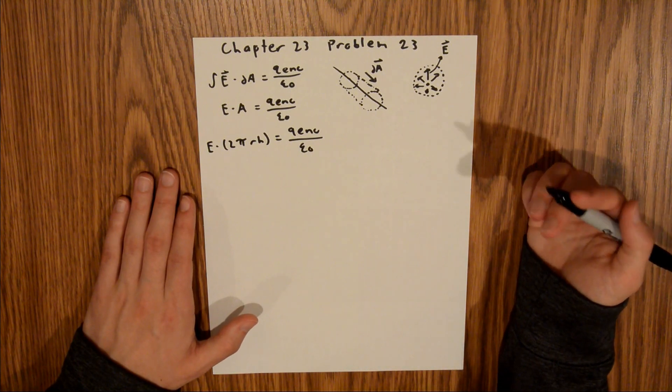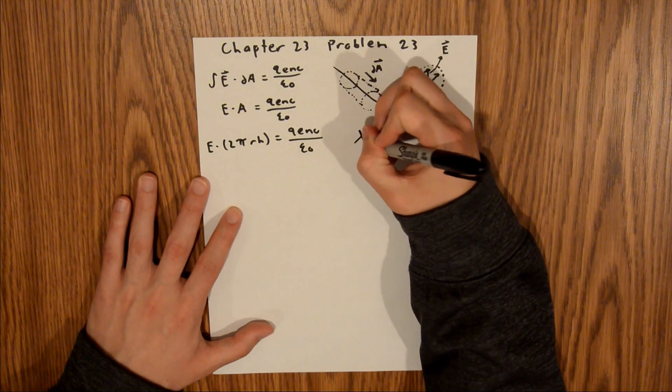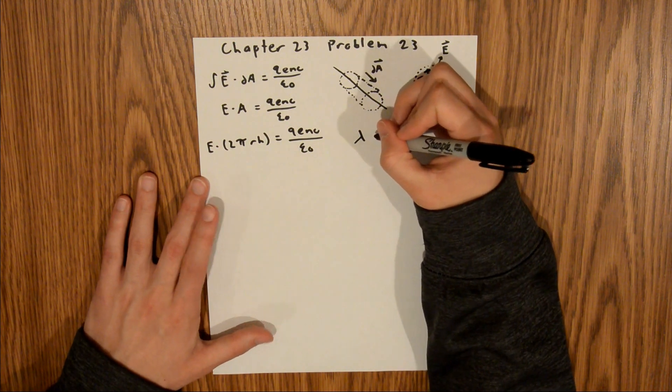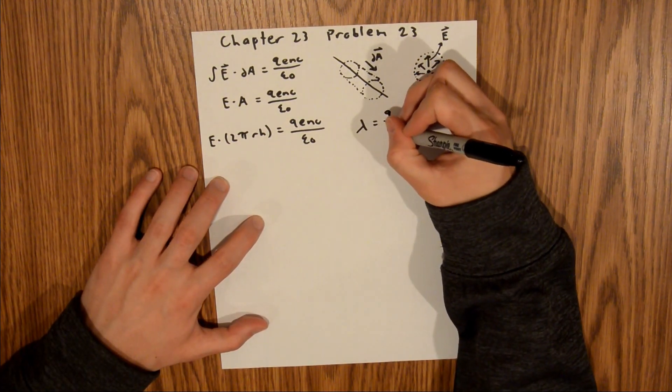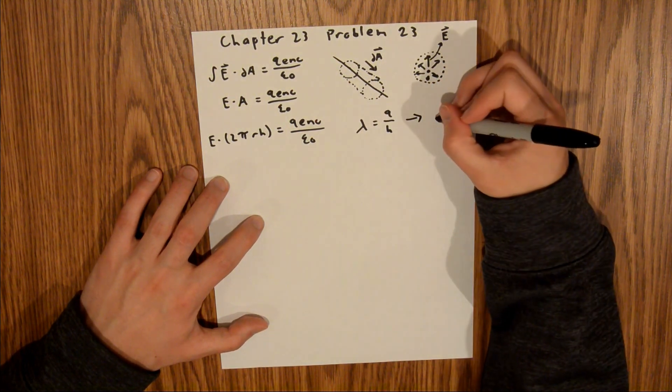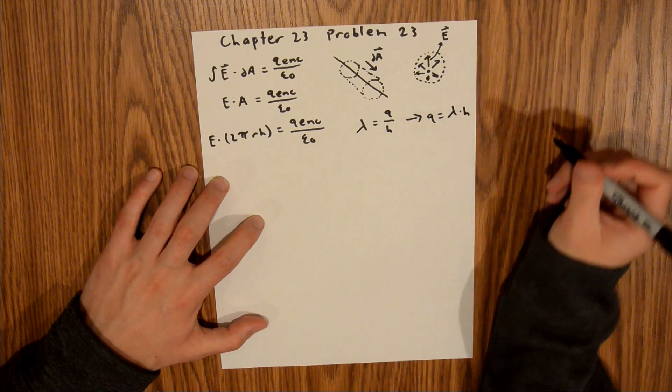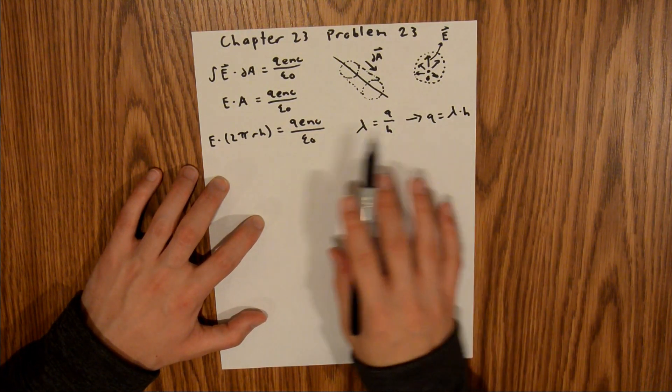And so in the problem, we're looking for charge density, which we can actually relate to Q. And so your linear charge density is equal to Q over H. And so if you multiply both sides by H, that'll give us that Q is equal to lambda times H.